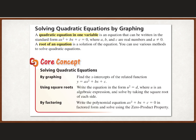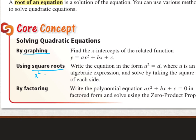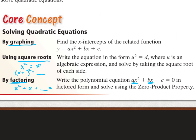There are three different ways we can solve quadratic equations. We can solve by graphing, which we'll talk about towards the end. We can solve with square roots — anytime we have x squared equals a number, or x plus a number squared equals another number. But if we have an x squared, an x, and a constant in our equation, we're going to solve by factoring.